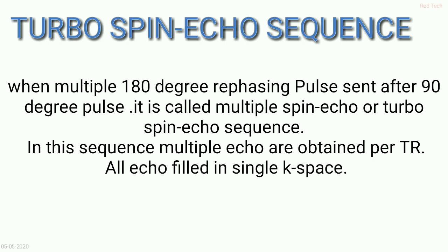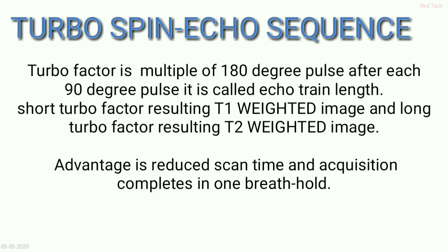In this sequence we have two names: multiple spin echo and turbo spin echo. When we acquire the signals at different times of echo, those signals are stored and fill a single k-space using different echo times.